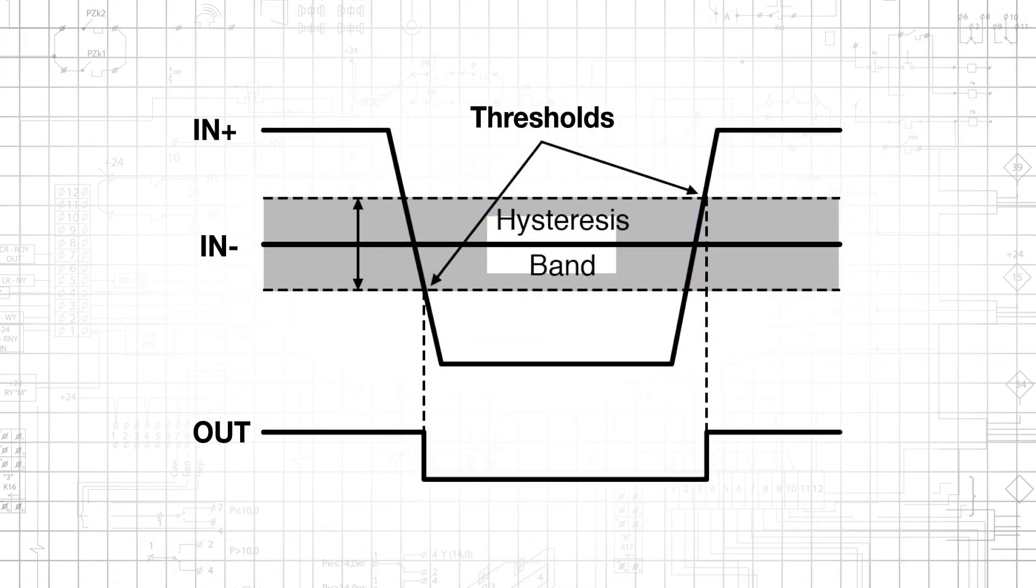The problem of spurious output transitions is resolved by incorporating hysteresis into the comparator circuit. The term hysteresis refers to the technique of using different thresholds for negative-to-positive transitions and positive-to-negative transitions. This creates a hysteresis band that extends above and below Vdiff equals 0 volts.